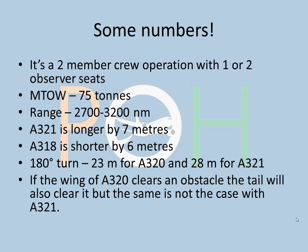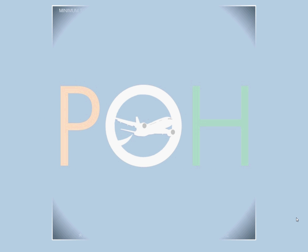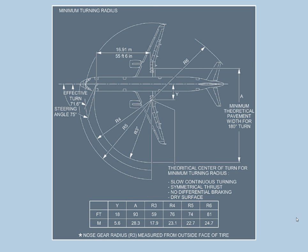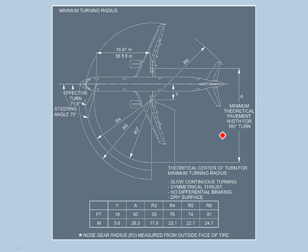Another interesting point: if the wing of the A320 clears an obstacle, the tail will also clear it. But that's not the case with the A321. Because the fuselage is quite longer compared to the wingspan on the 321, the tail has to clear the obstacle first — only then will the wing clear. On the 320, if the wing clears, the tail will also clear. It's essentially about the length of the fuselage.